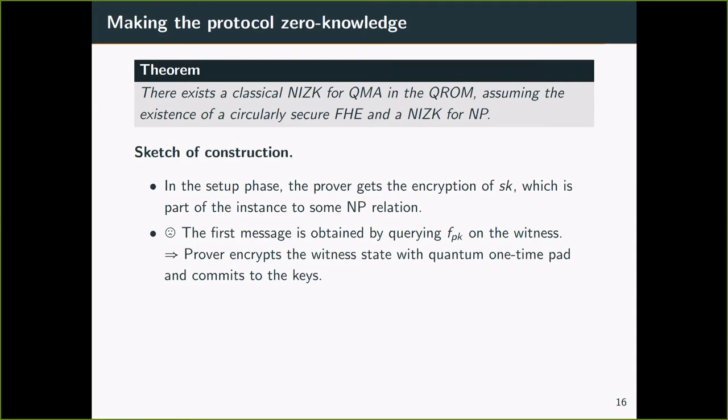The original protocol is not zero knowledge because the first message is obtained by querying the function f_PK on the ground state. We get around this by having the prover encrypt the ground state with a quantum one-time pad and commits to the keys so the prover is unable to change a value afterwards. So now the first message is obtained by querying f_PK on a maximally mixed state. So the first message is simulatable.